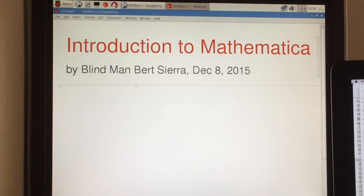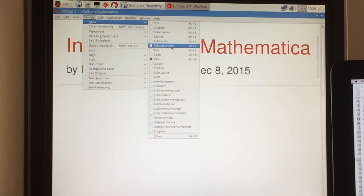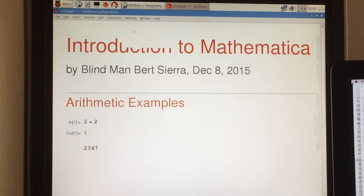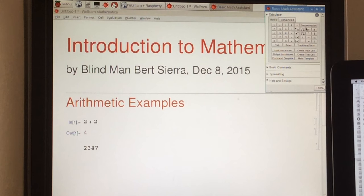I might put in my name, so I might put that in as a subtitle. By Blind Man, Burt Sierra, December 8th, 2015. So let's do what we were doing before. We started with some numeric examples. We might start a section, arithmetic examples. So, we can put in the same things we did before. 2 plus 2. That comes back as 4.